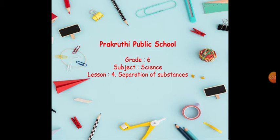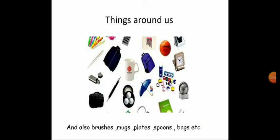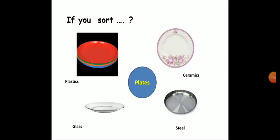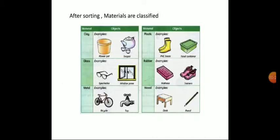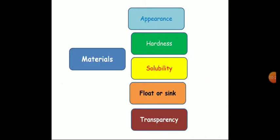So in this lesson — separation of substances — we have learnt about the things around us and how each product is made, and we have learnt about the five characteristics. The first one is appearance, hardness, solubility, flow, and transparency.